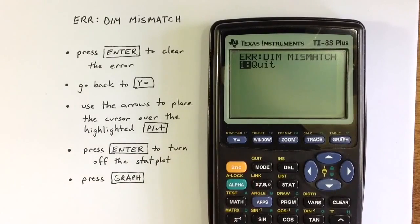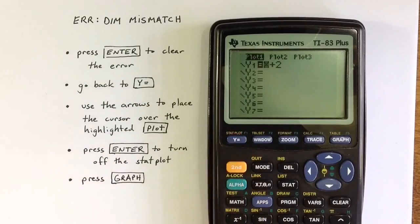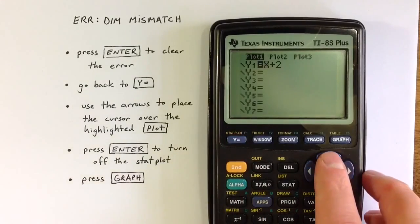So to do that, you can hit enter to clear the error, press the y equals key to go back to the y equals menu,